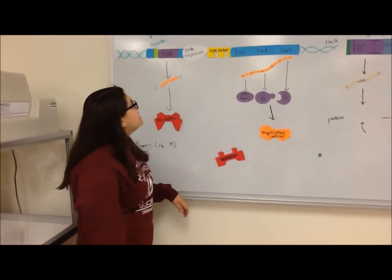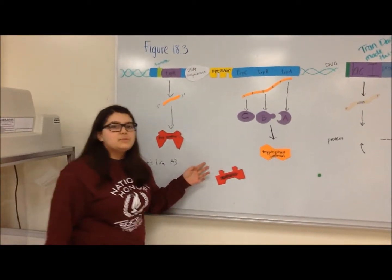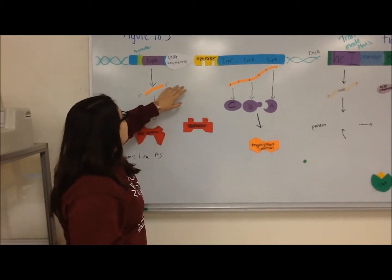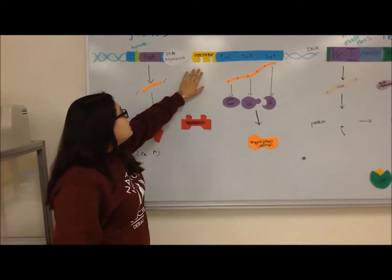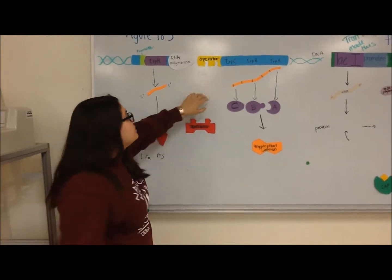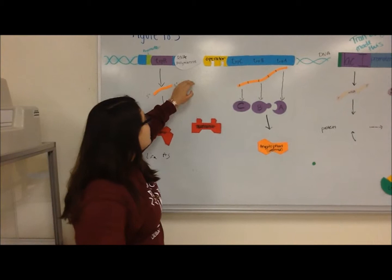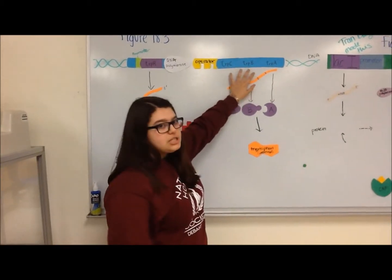The first operon I will discuss today is the tryptophan operon, which is responsible for the synthesis of tryptophan. In its natural state, the operon is turned on, which means that RNA polymerase can easily bind to the promoter and lead to the transcription of these genes.